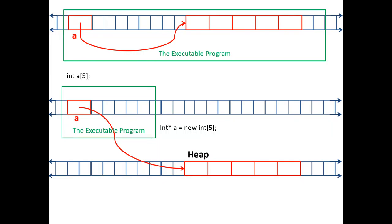It's not in your executable anymore. So if you make the size 5000, your executable remains the same. The size of the executable won't change because the memory is actually allocated outside of your program.